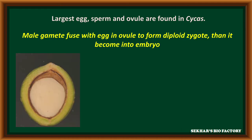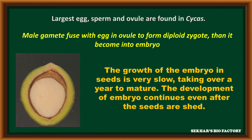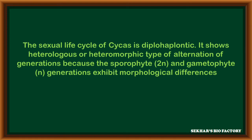The male and female gametes are fused inside the ovule to form a diploid zygote. This diploid zygote then becomes an embryo. The growth of the embryo in the seed is very slow, taking over years to mature. Even the development of the embryo takes place after the seed is shed. The sexual life cycle of Cycas is diplo-haplontic.